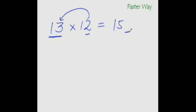Now for the last digit, all you need to do is multiply this digit with this digit. So 3 times 2 is 6. So the answer is 156. Now, isn't that easy?